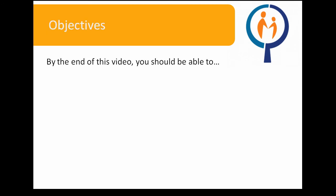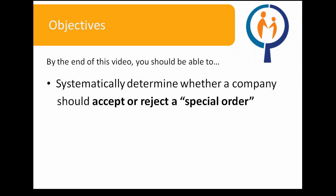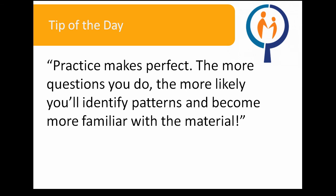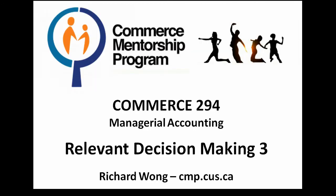This concludes our online tutorial on relevant decision making. Let's review our objectives for today. By now, you should be able to systematically determine whether a company should accept or reject a special order, and systematically determine an optimal production or selling plan when there are multiple products — a product mix or sales mix question. If you are unable to complete any of these objectives, now is a good time to re-watch this video or complete more exercises. Remember that practice makes perfect. For additional problems, please visit us online at cmp.cus.ca. If you have additional questions, please consult your professor or teaching assistants. Thank you.